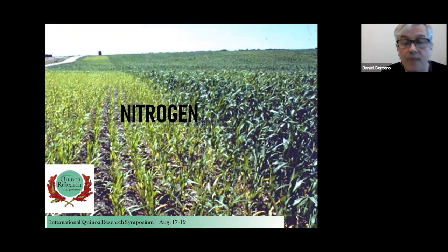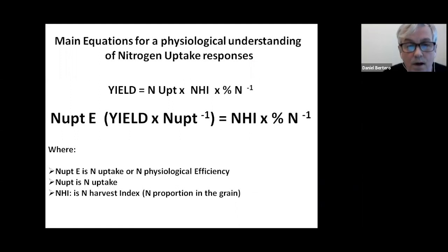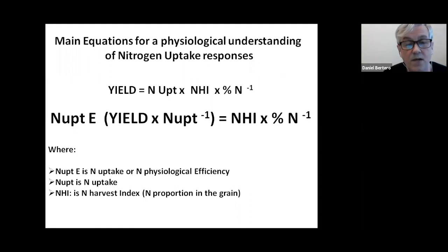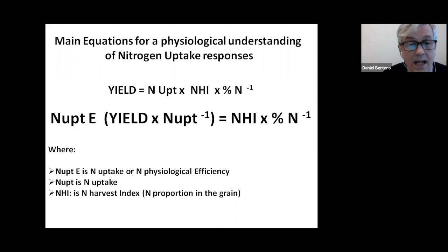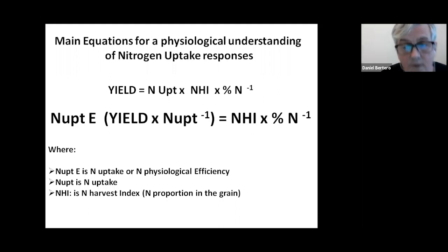My second part is related to nitrogen. The approach we use is based on two equations. Yield can be understood in terms of nitrogen uptake by the crop, the nitrogen harvest index — the proportion of nitrogen going to the seed — and the percent of nitrogen in the grain. From this we can estimate nitrogen utilization efficiency, which is the relationship between yield and nitrogen uptake. This efficiency depends on two factors: the nitrogen harvest index — higher index means higher efficiency — and the percent of nitrogen in the seed, where higher content means lower efficiency.